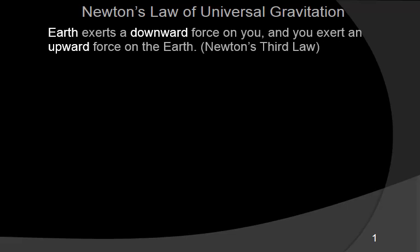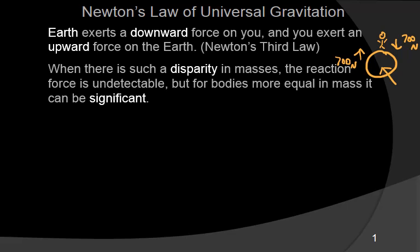The Earth exerts a downward force on you, and you happen to exert an upward force on the Earth. If we jumped into the air and the Earth pulled down on me with 700 newtons, I'm pulling on the Earth with 700 newtons. Now, the inertia of the Earth is huge, so you're not even going to be able to detect any kind of movement of the Earth. There's such a disparity in masses that you're not even going to be able to tell.